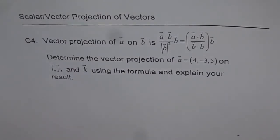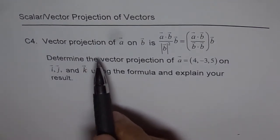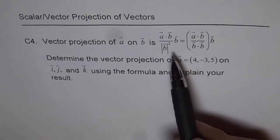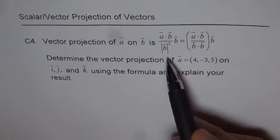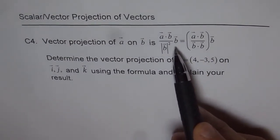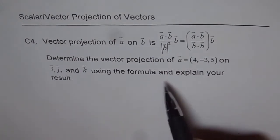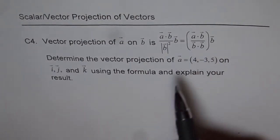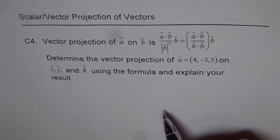We are trying to understand projection of vectors, and here is C4, the communication question 4. Vector projection of A on B is - so these are the two formulas: A dot B divided by magnitude of B squared times vector B, or ratio of A dot B and B dot B times the vector B.